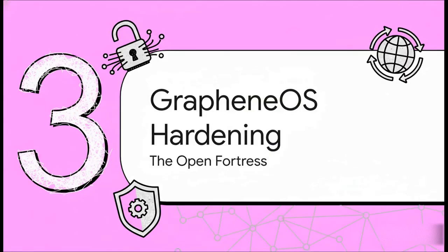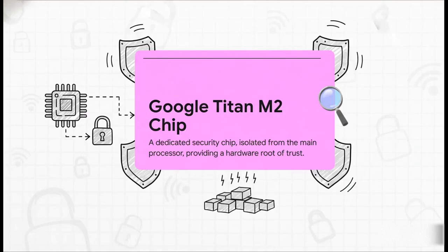Now let's switch gears and turn to GrapheneOS, which represents a fundamentally different approach. We're moving from a closed ecosystem to a hardened open-source operating system built on top of the Android Open Source Project. It runs exclusively on Google's Pixel hardware — not for branding, but for a very specific security chip inside: the Google Titan M2.